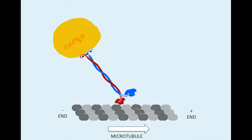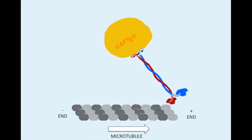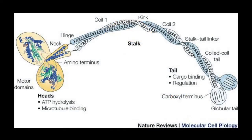Kinesins carry cargo towards the positive end of the microtubule. Kinesin has a globular tail at its carboxyl terminus, which carries cargo such as organelles or vesicles, and a stalk that contains hinges or kinks for flexibility. The stalk, which is made of coiled coils, connects the tail to the heads or the motor domains, where most of the action in kinesin occurs.